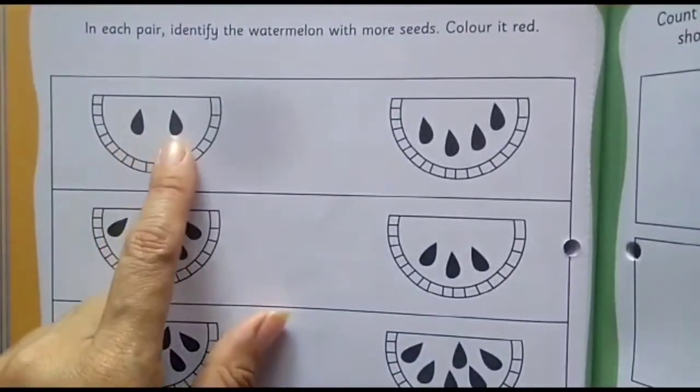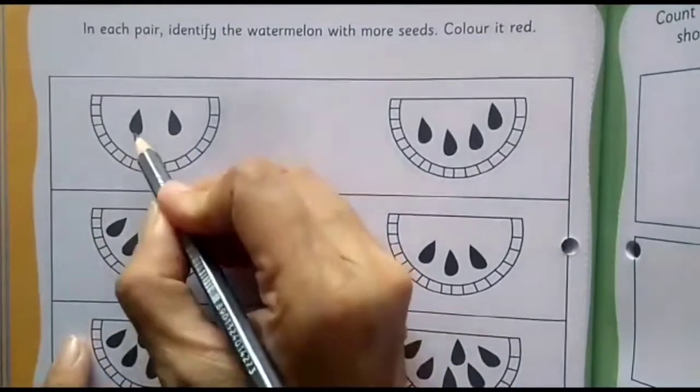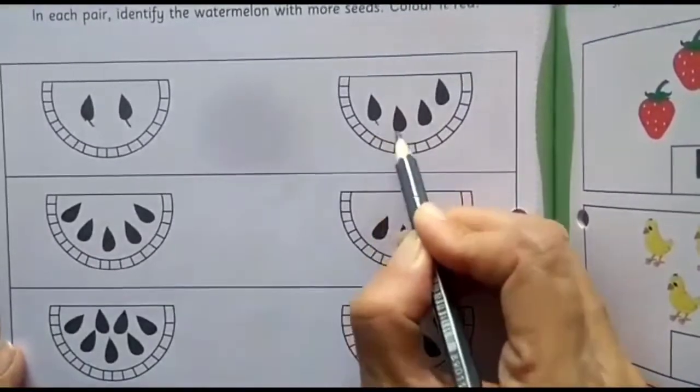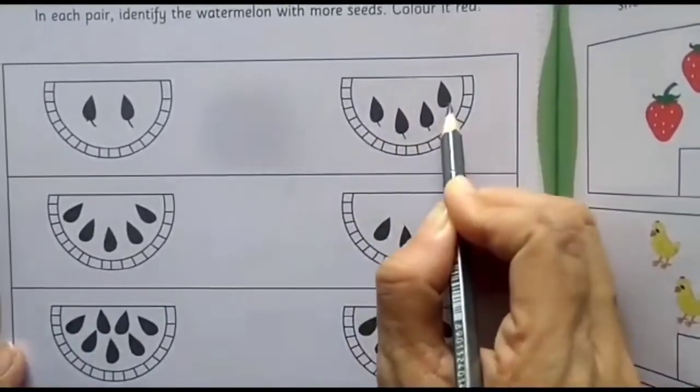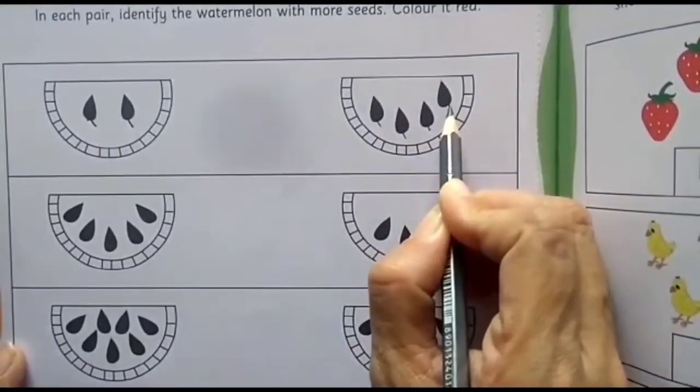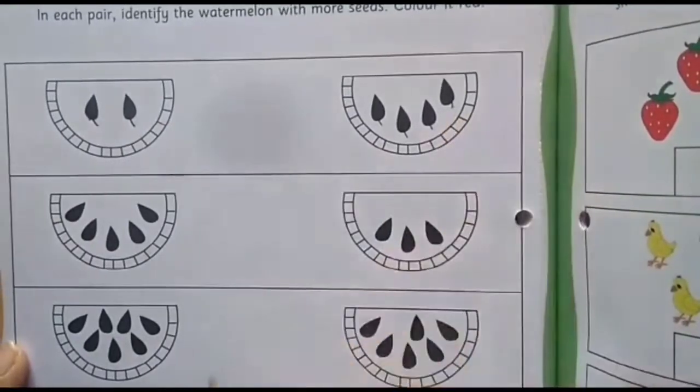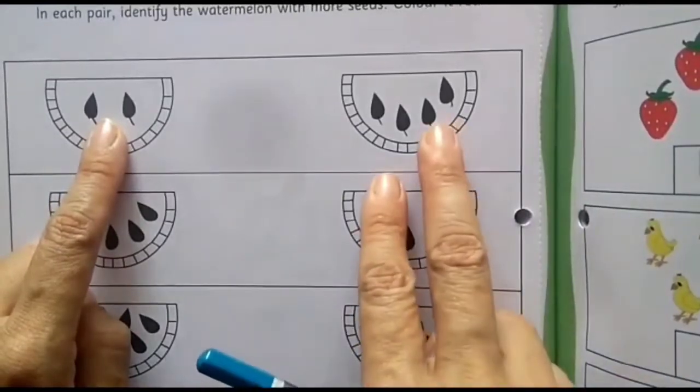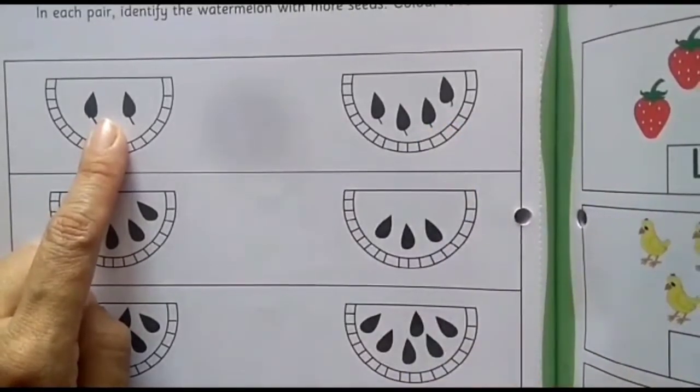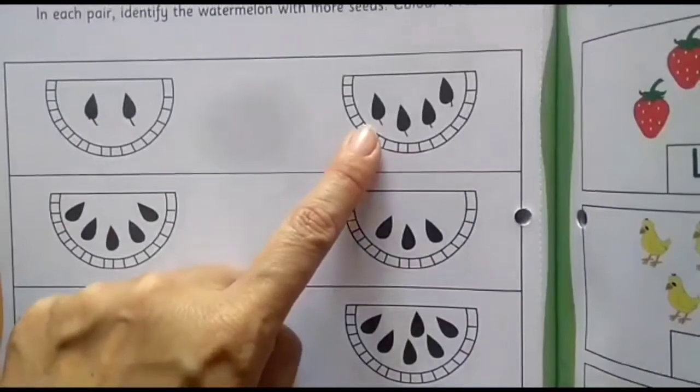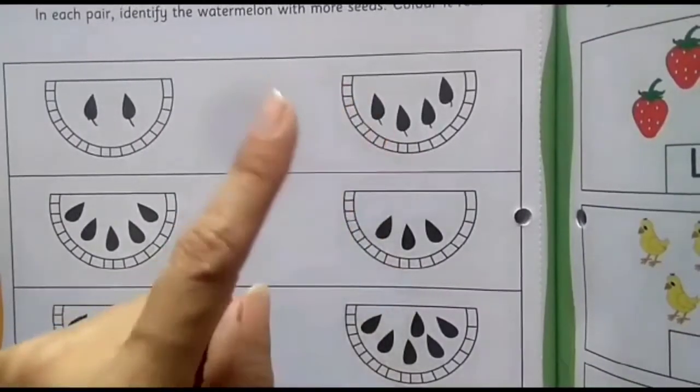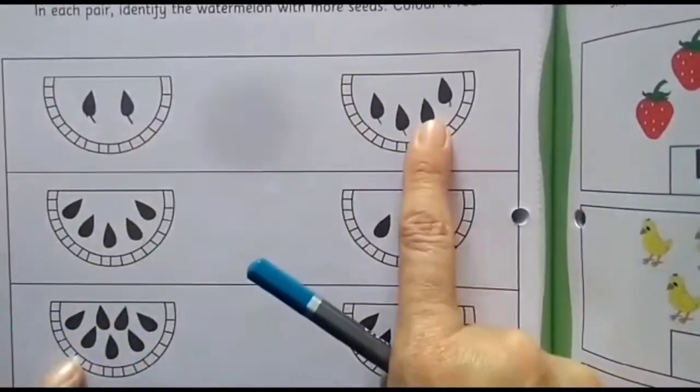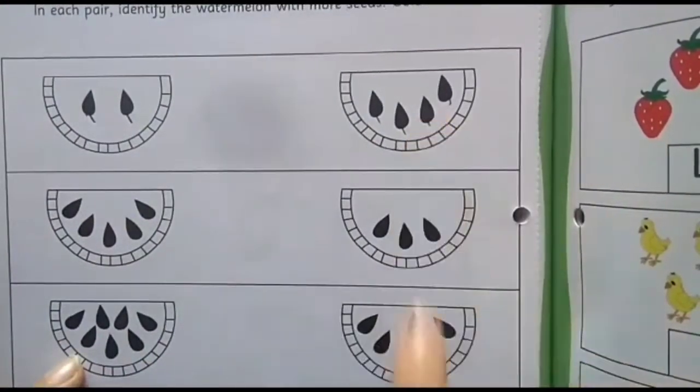How many seeds can you see? Count 1 and 2. Right? And here how many? 1, 2, 3, 4. So which watermelon you need to color? This one? Number 2 is more or number 4 is more? Which one? Always number 4. Right? Because 1, 2 then 3 and then 4. So we have to color this watermelon with red. Let's do it.